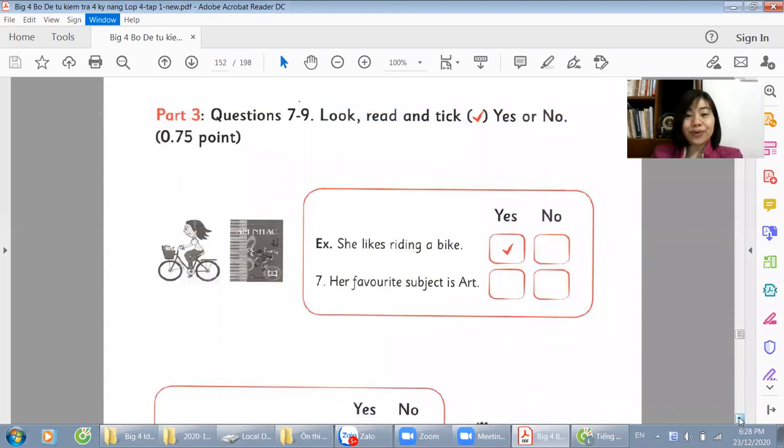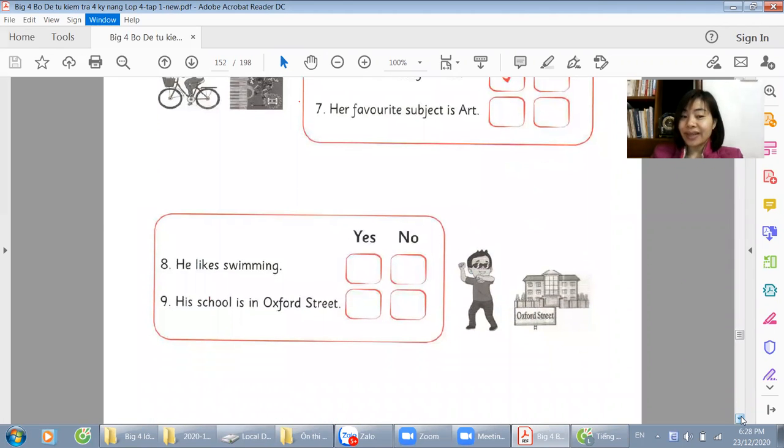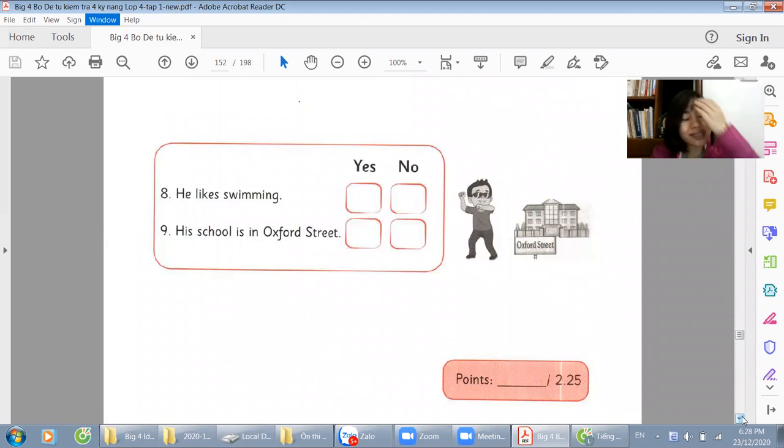We move on to the final section. Look at the picture to choose if this sentence is true or false. Now, a picture of a guy dancing in front of Oxford Street. He likes swimming. This building doesn't look like swimming. So we will tick no. Question 9. His school is in Oxford Street. Yes, that's correct. This is on Oxford Street. So we will choose yes.